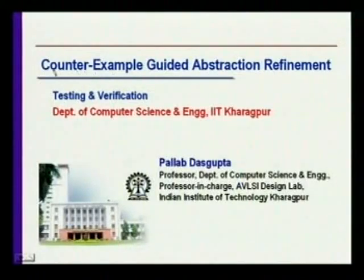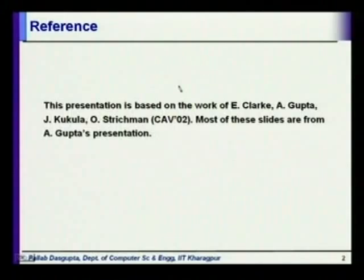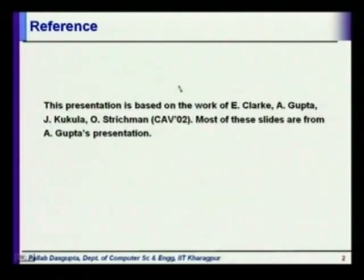So you create an abstraction, get a counter example, find that it is fictitious, and then do abstraction refinement. We will use the term CEGAR as a short form for this, because it is C-E-G-A-R. This presentation is based on the work of Ed Clarke, Anubhav Gupta, James Kukula, and Strickman. Most of these slides are from Anubhav Gupta's presentation at CAV 2002, where he presented this work on CEGAR — that is the origin of CEGAR. It has since had many improvements and is one of the main forces used today, not only in hardware verification, but also in software verification. It is a very useful technique.